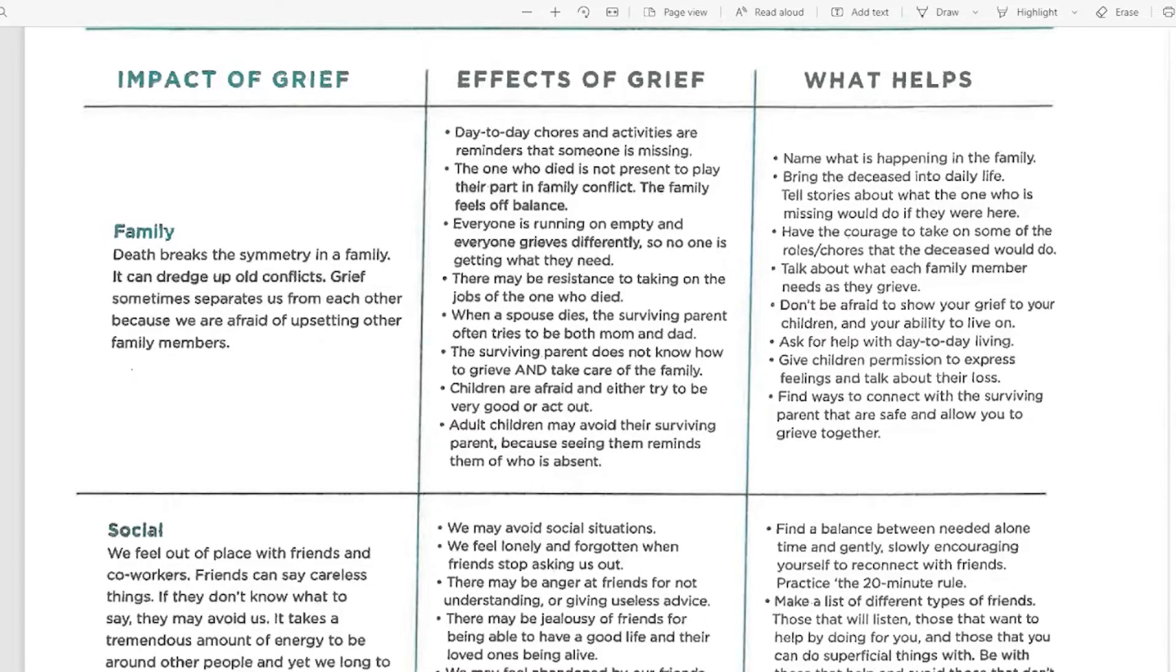Grief affects our family because it breaks the symmetry of the family. It can also dredge up some old conflicts. And grief sometimes separates us from each other because we're afraid of upsetting each other or different family members. Sometimes day-to-day chores and activities are a reminder that someone is missing in our family. The one who died is not present to play their part in maybe family conflict and so the family feels very off-balanced. And everyone is typically running on empty because everyone grieves differently. So sometimes no one is getting what they need because it is so different, and that can be really hard in a family.